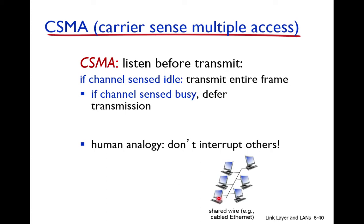If the medium is busy, this node will not transmit the data. When the node senses the medium and the medium is free — that is, idle, meaning no other node is transmitting — because if another node transmits, that signal moves along the link from one end to another. So if this node is not listening to any signal, it means no one is transmitting on this link.